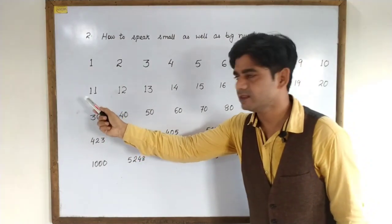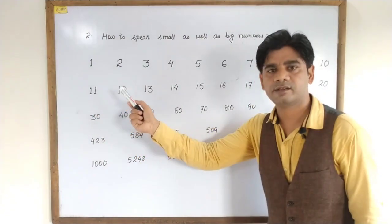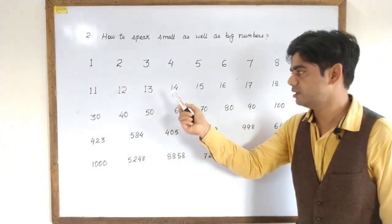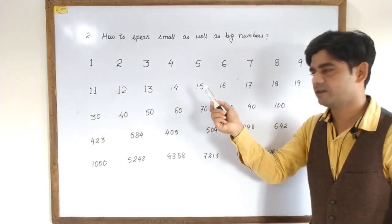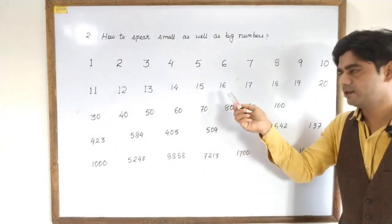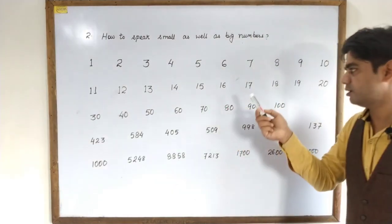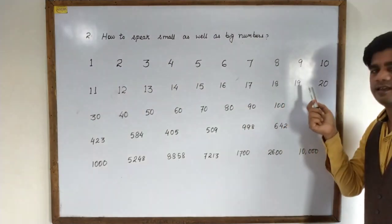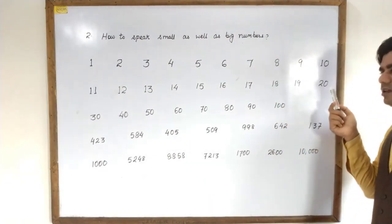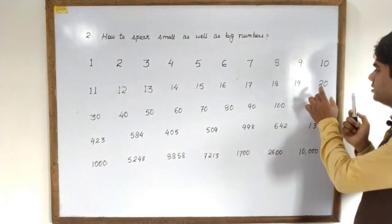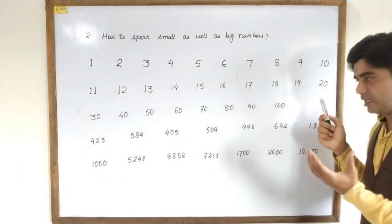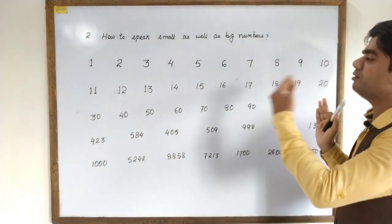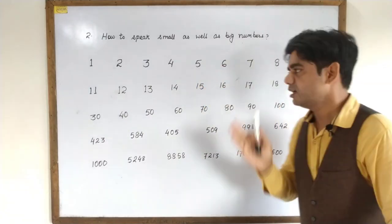Nine. Nine. Repeat after me twice. Ten. Ten. Eleven. Eleven. Twelve. Twelve. Thirteen. Thirteen. Fourteen. Fourteen. Fifteen. Fifteen. Repeat after me twice. Seventeen. Seventeen. Eighteen. Eighteen. Nineteen. Nineteen.